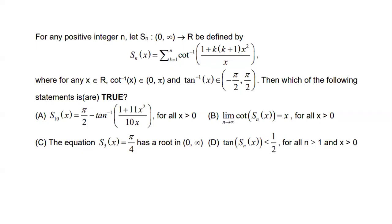In this video we are going to solve this problem. For any positive integer n, let S_n be a function defined from 0 to infinity to R. This function is the summation of cot inverse of (1 + k(k+1)x²) divided by x, where the summation goes from k = 1 to n.